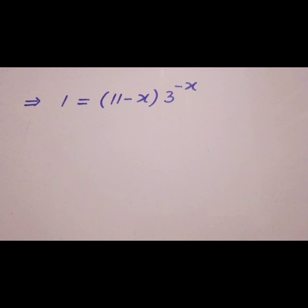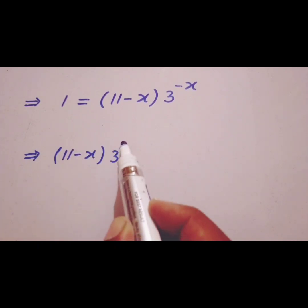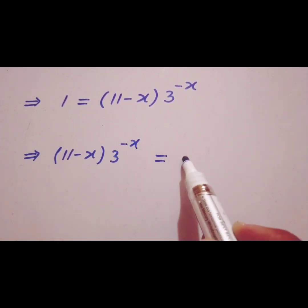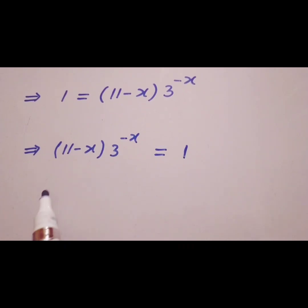We can write this equation as (11 - x) × 3^(-x) = 1. Now multiplying both sides by 3^11.